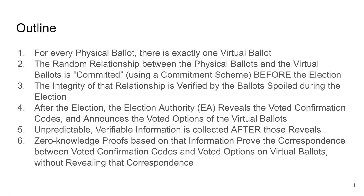Before we get too bogged down in the details, here is an overview of how the switchboard works. For every physical ballot, there is exactly one virtual ballot. The random relationship between the physical ballots and the virtual ballots is committed using a commitment scheme before the election. The integrity of that relationship is verified by the ballots spoiled during the election. After the election, the election authority reveals the voted confirmation codes and announces the voted options of the virtual ballots. Unpredictable, verifiable information is collected after those reveals. Zero-knowledge proofs based on that information prove the correspondence between voted confirmation codes and voted options on virtual ballots without revealing that correspondence. Once all of this has been done, you can count the virtual ballots to get the results.